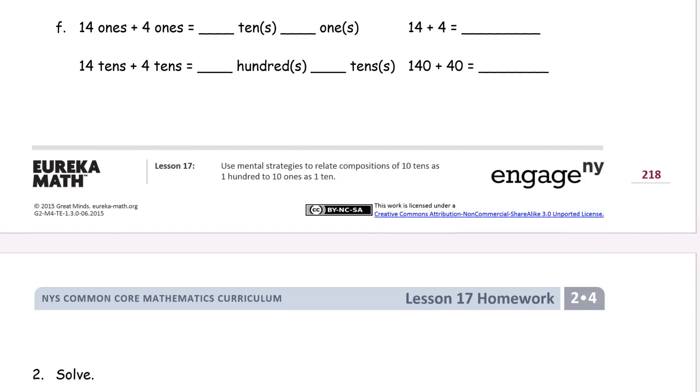Fourteen ones plus four ones is, that's a ten and eight ones, right? Because you're adding the four ones and the four ones. Fourteen plus four is eighteen, and so this hundred forty plus forty is a hundred eighty. Fourteen tens plus four tens is one hundred and eight tens.